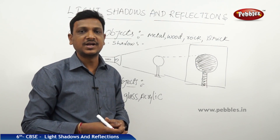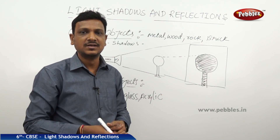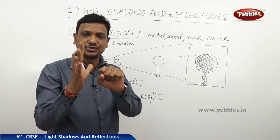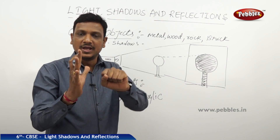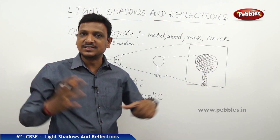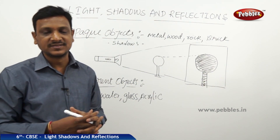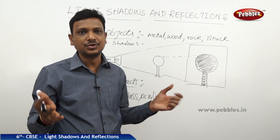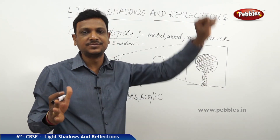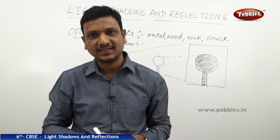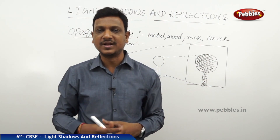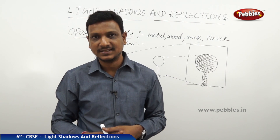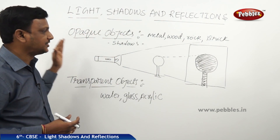Only opaque objects are able to cast shadows. You can do a number of activities with a torch light — see how shadows are formed on your fingers. If you keep the torch close to your hand, observe the size of the shadow. If you take the light away, you will find differences in size and darkness. You can also change the angle of the torch — keep it down or up — and observe how the shape and size of the shadow are affected.